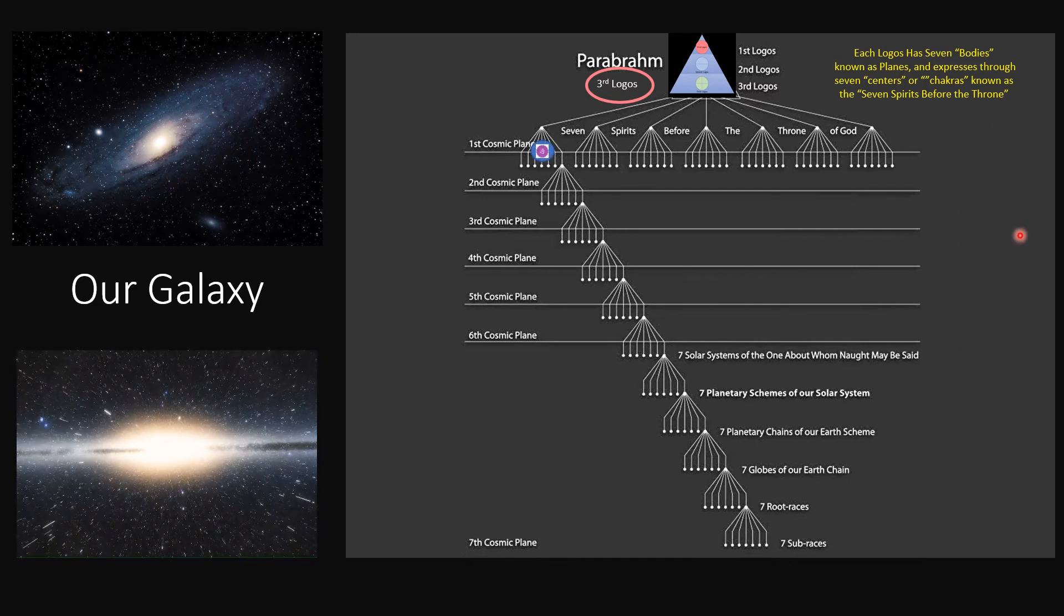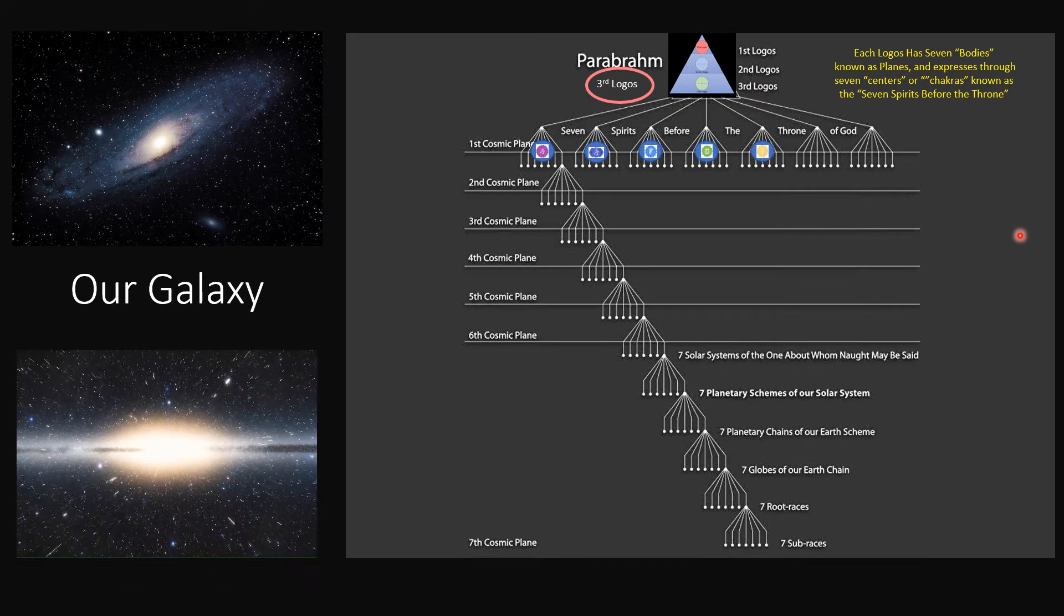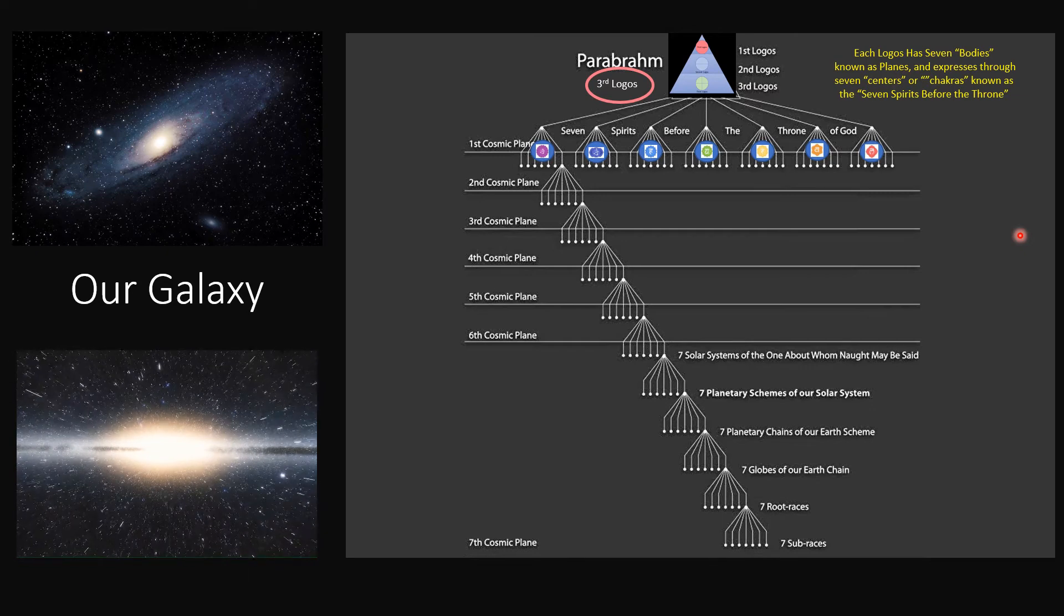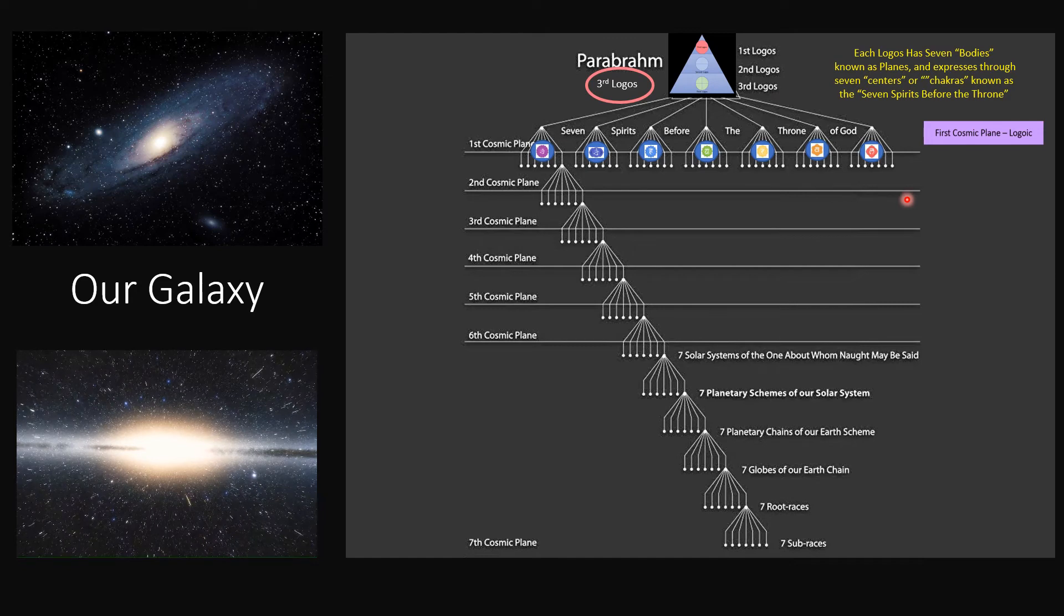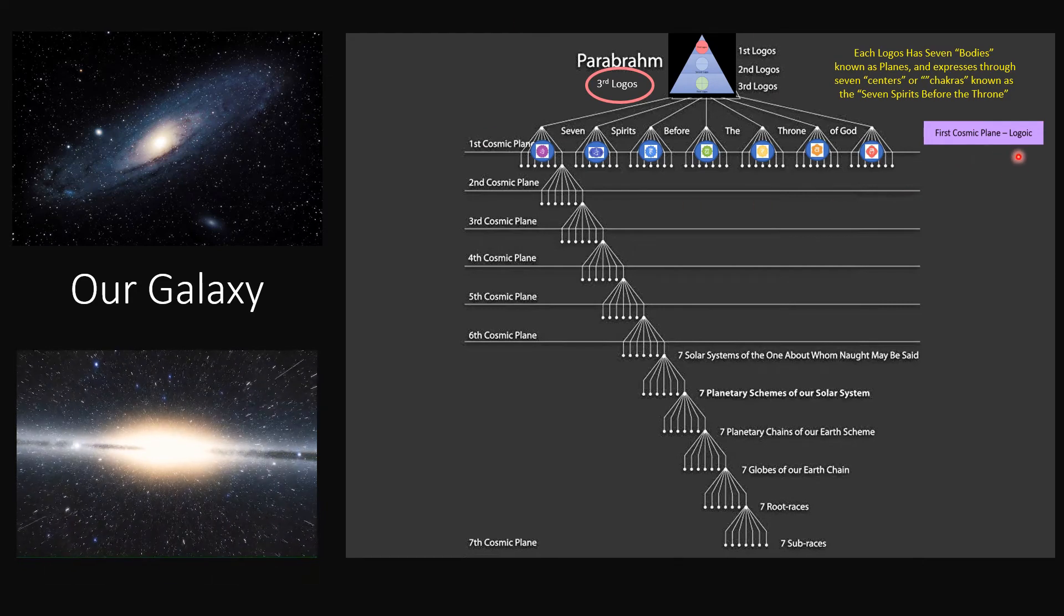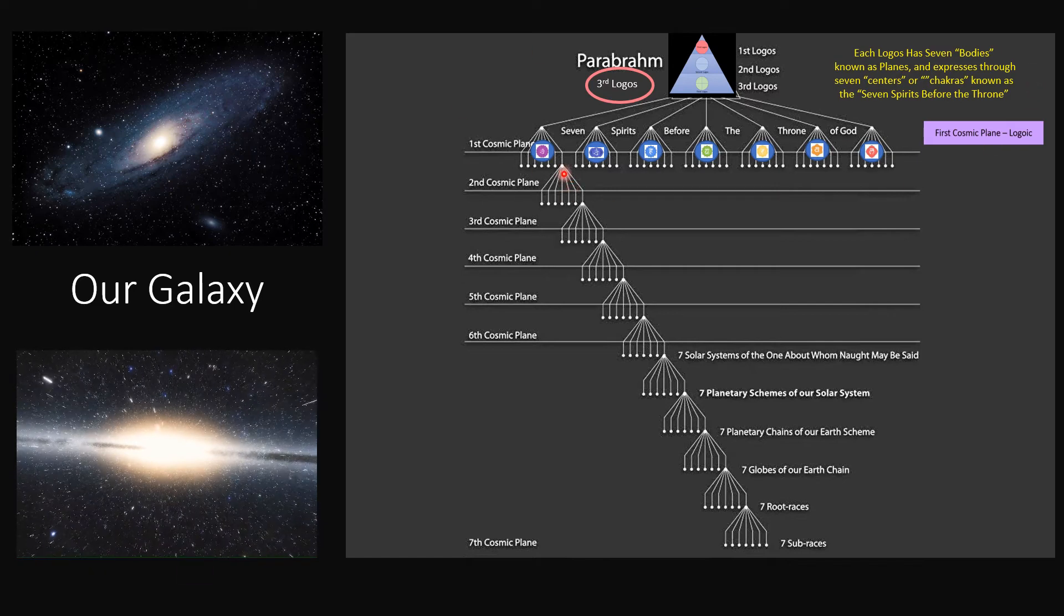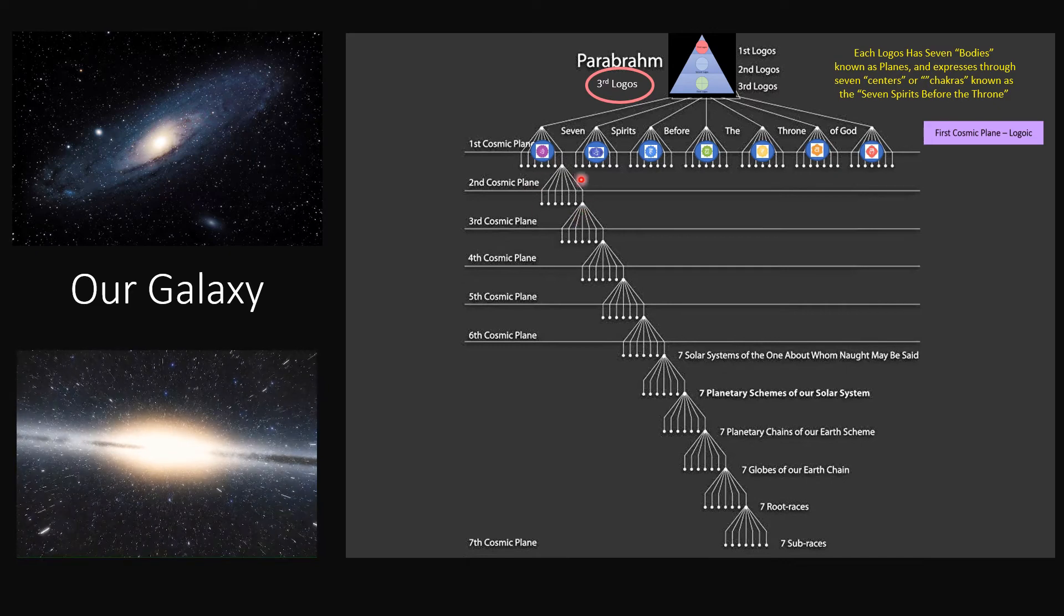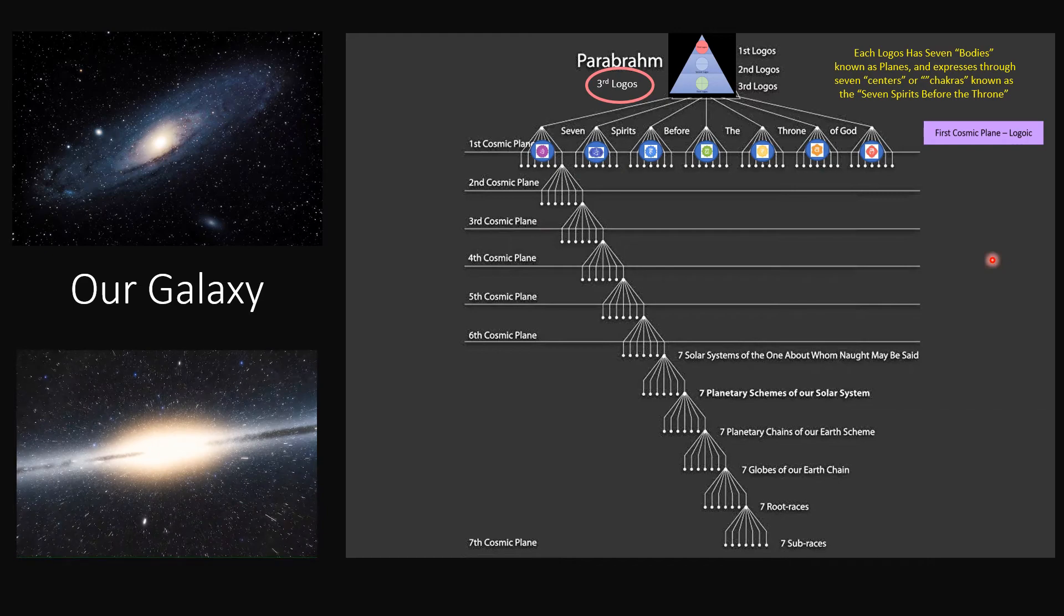And those seven planes of consciousness manifest through seven chakras. So these seven spirits before the throne of God are really like the seven chakras that we have in our body. And they are said to exist primarily on the first cosmic plane, or the Logoic plane. So here they all are, up here, and then a little piece of them comes down and starts around. It starts to go through a life cycle lower and lower and lower.